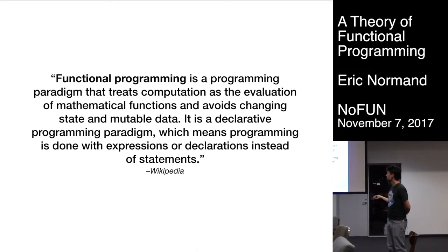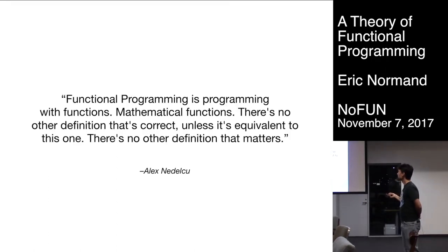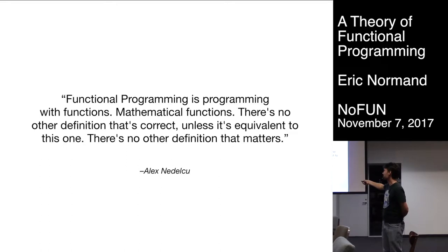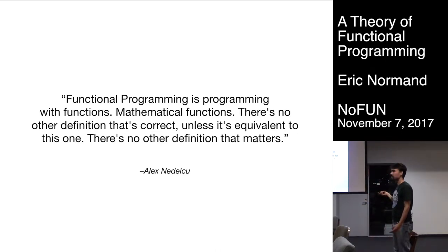Wikipedia has the same kind of thing: evaluation of mathematical functions, avoids changing state and mutable data, declarative programming. Then: functional programming is a way of writing software using only pure functions and immutable values — that's just not true. Some definitions seem very arrogant, like there's no other definition that's correct unless it's equivalent to this one. And then: functional programming is programming with functions. I mean, JavaScript has functions, so if you use a function, it's functional programming. Some of them happen to be, but not necessarily.